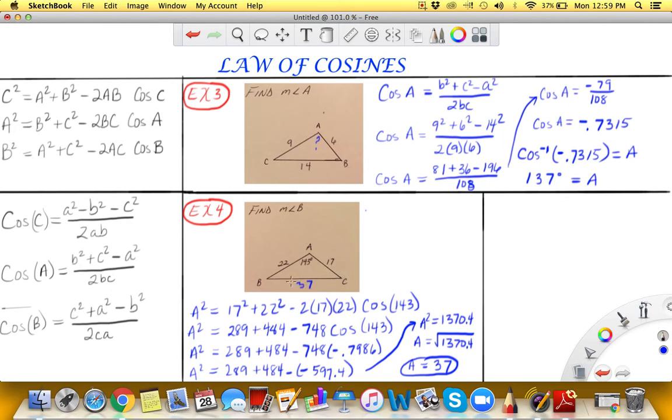Now we must go into part two in order to find the measure of angle B, so we're still looking for this measure of this angle. In order to do that we must go to a second part and then we're going to use this form of the formula right here.